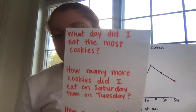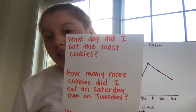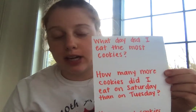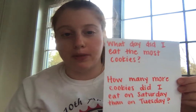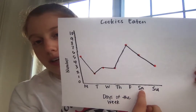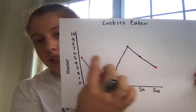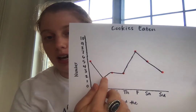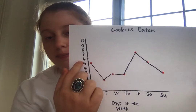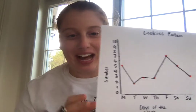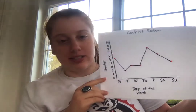Our second question is: how many more cookies did I eat on Saturday than on Tuesday? I right away recognized those clue words — "how many more" tells us that we need to do subtraction to figure out this problem. So if we look at Saturday, it looks like I ate six cookies. On Tuesday I ate two cookies. So I'm going to take six minus two and the answer is four. I ate four more cookies on Saturday than I did on Tuesday.